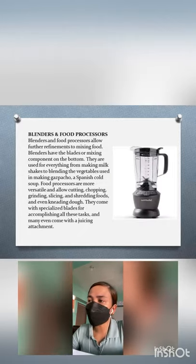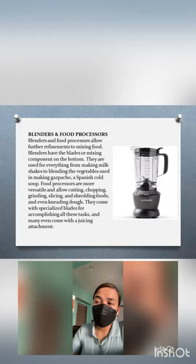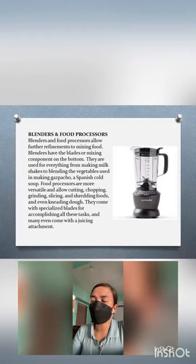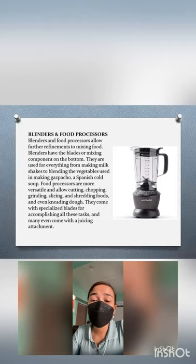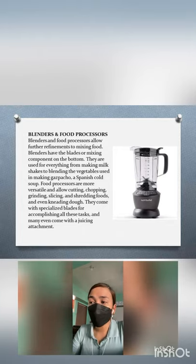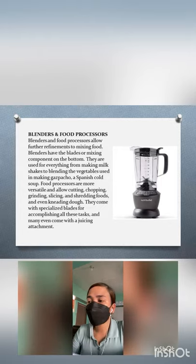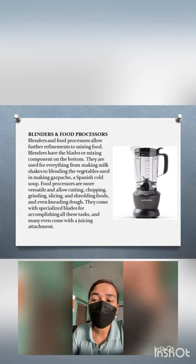Next, we have blenders and food processors. They allow further refinements to mixing food. Blenders have blades at the bottom and are used for everything from making milkshakes to blending vegetables for gazpacho, a Spanish cold soup. Food processors are more versatile — they can allow cutting, chopping, grinding, slicing, and shredding foods, and even kneading dough. They come with specialized blades for all these tasks, and many even come with a juicing attachment.